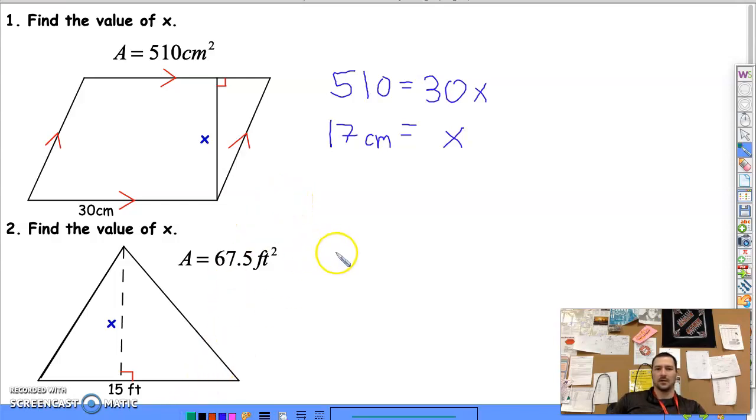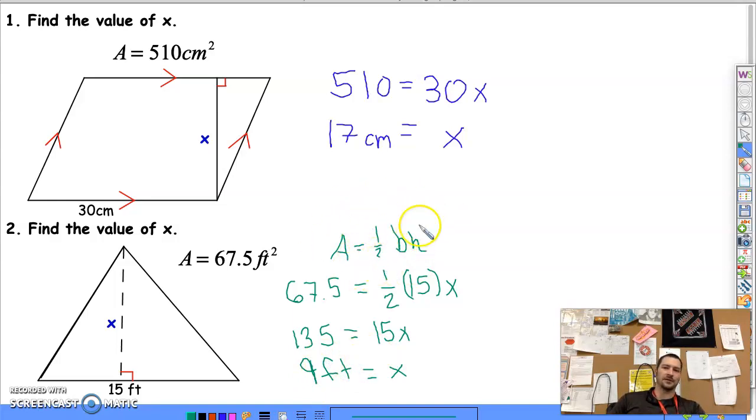All right, next, we have the triangle. So, remember, area is 1 half the base times the height. So, we would have 1 half our base, which is 15. And then our height is X. Our area is 67.5. To get rid of the half, we can multiply both sides by 2. So, let's see, 67.5 times 2 is 135, equals 15X. And, so, X is going to equal 9 feet. So, write out your formulas, especially when you do triangles. There's a little more to it. So, I will be checking for work, like I normally do on your assignments.